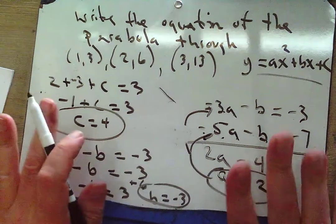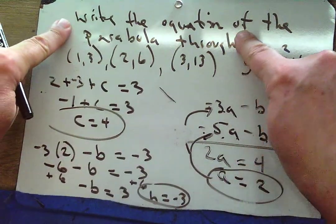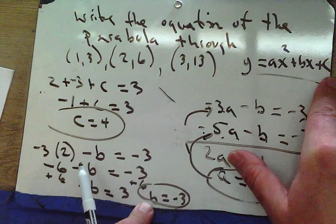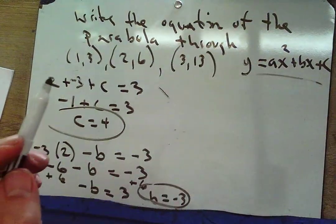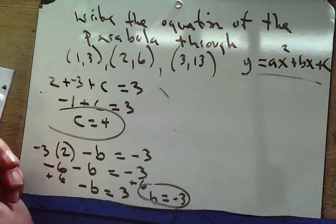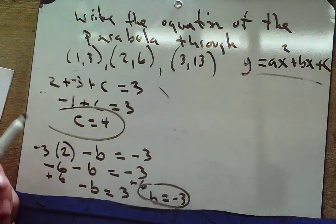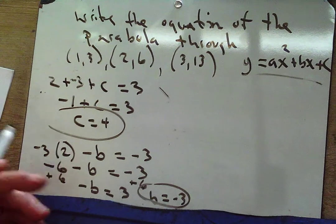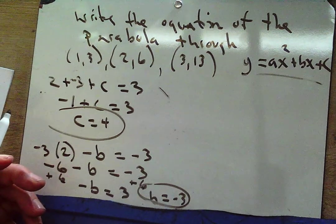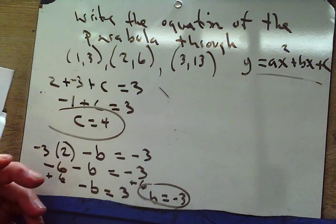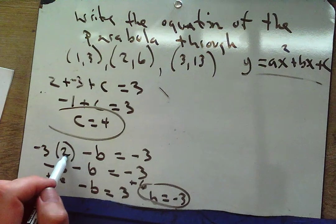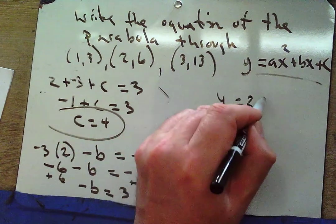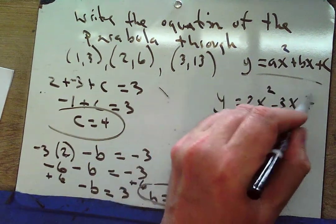We're not done yet — the question asks for the equation of the parabola, not just the constants. We take a=2, b=-3, c=4 and write: y equals 2x² minus 3x plus 4. That's our parabola equation.